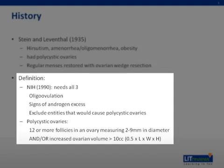In 2003, a meeting in Rotterdam suggested that you need two of three things to diagnose PCOS. Those are oligo-ovulation or anovulation, excess androgen activity, or polycystic ovaries by ultrasound. Of note, polycystic ovaries can be diagnosed with 12 or more follicles in one ovary, with follicles ranging anywhere from two to nine millimeters, and/or an increase in total ovarian volume greater than 10 cc's.